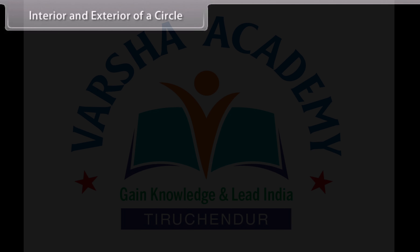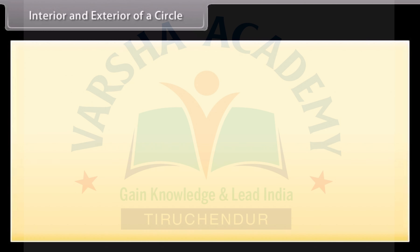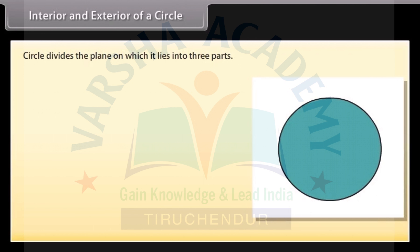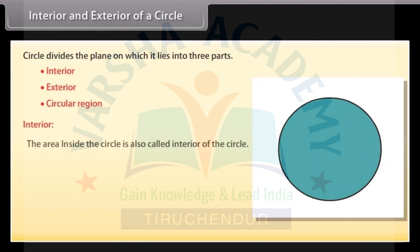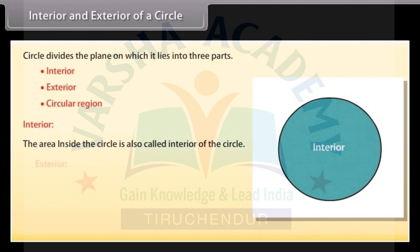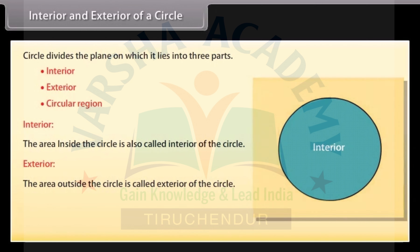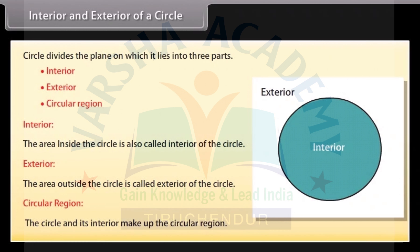Interior and exterior of a circle. A circle divides the plane on which it lies into three parts: interior, exterior, and circular region. The area inside the circle is called the interior of the circle. The area outside the circle is called the exterior of the circle. The circle and its interior make up the circular region.